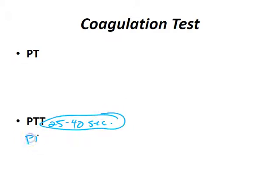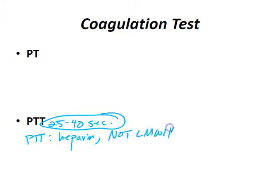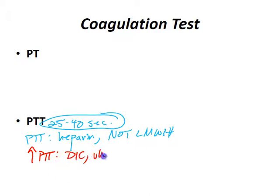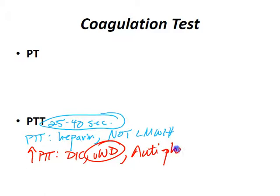PTT is used to measure heparin — but be careful, because low molecular weight heparin, such as enoxaparin therapy, you can't use PTT to follow. You'll see an increased PTT with certain diseases, especially DIC, Von Willebrand's disease — that's a big one — and antiphospholipid antibody syndrome associated with lupus.